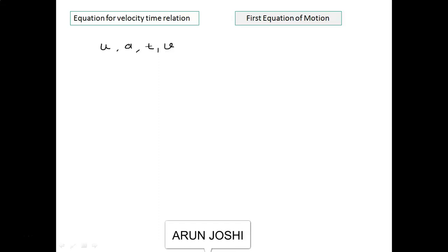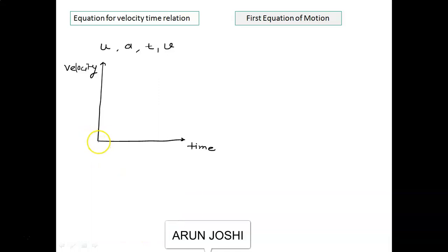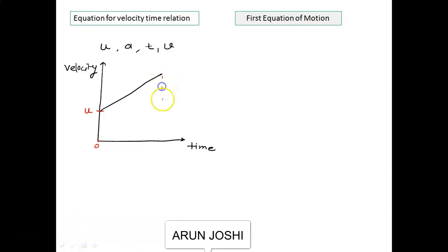If we plot this on the velocity-time graph, this is the time axis and this is the velocity axis. Initially velocity is u, meaning when time is 0, velocity has some value u. Since acceleration is constant, the graph must be a straight line. After time t, velocity becomes v.